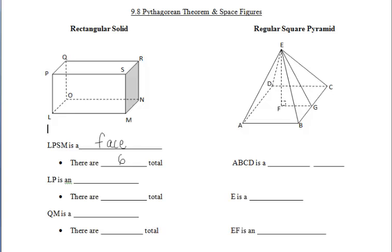Now let's discuss LP. If we take a look at LP, LP is right here. LP is what we call an edge of the figure. Let's go ahead and figure out how many edges we have, and sometimes you can use a highlighter to determine this. I already highlighted one edge.